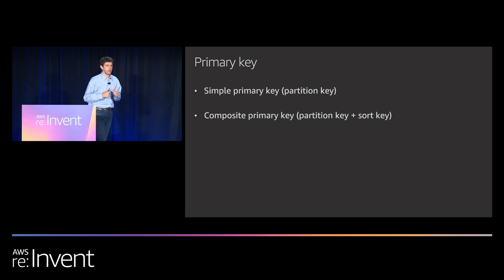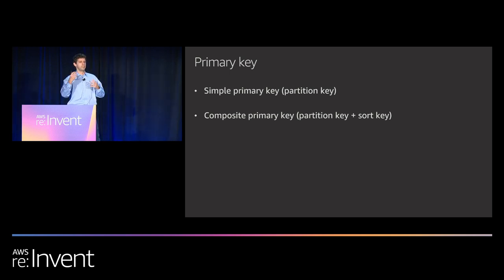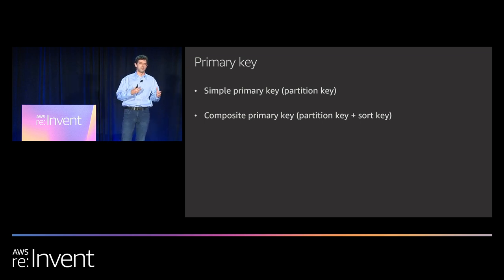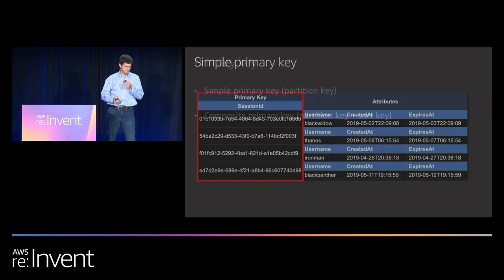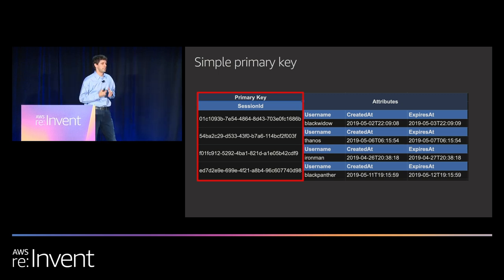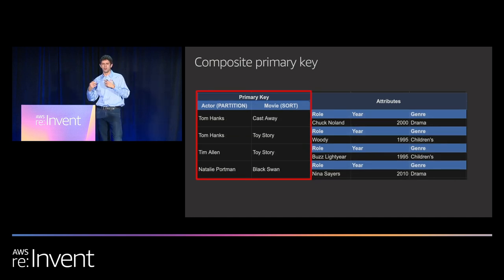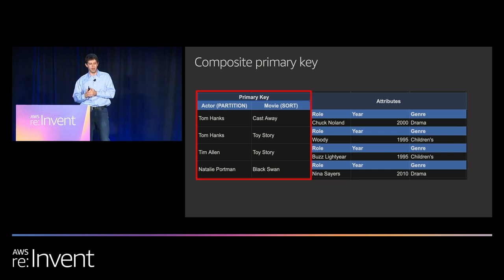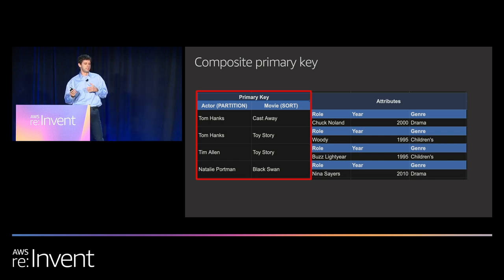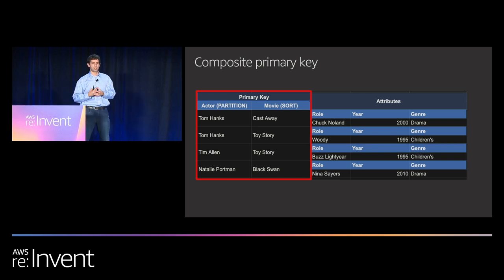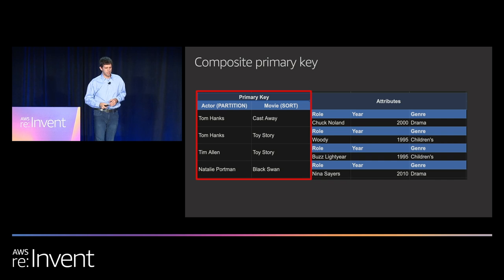Primary keys are going to be pretty critical — all your access patterns are driven off them. There are two kinds of primary keys. The first is a simple primary key with just a partition key, like in that session store with just the session ID. You can also have a composite primary key with both a partition key and a sort key. For example, with actors in movies, you'd use actor name as the partition key and movie name as the sort key. I can have two records with Tom Hanks, but it's unique because it's the combination of partition key and sort key.